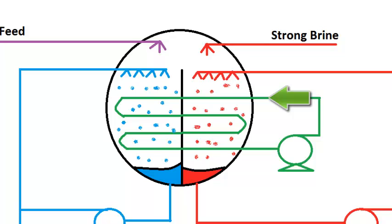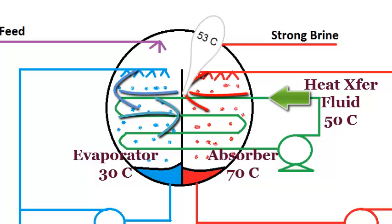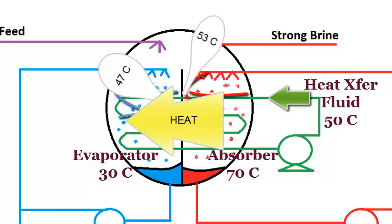If the evaporator is operating at 30C and the absorber at 70C, the average temperature of the heat exchange fluid may be around 50 degrees C. As the fluid passes through the absorber, it gains sensible heat, reaching perhaps 53 degrees C. Then, as it passes through the evaporator, it loses sensible heat until it cools down to perhaps 47 degrees. The net result of multiple iterations is a flow of heat from absorber to evaporator.